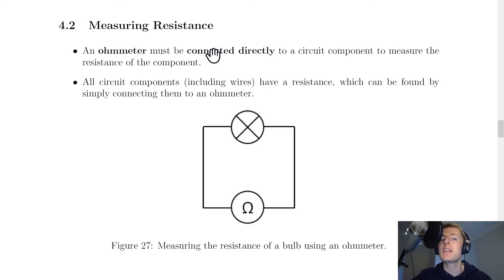And this must be connected directly to a circuit component to measure the resistance of the component. So we don't actually connect an ohmmeter into a circuit like an ammeter or in parallel with something like a voltmeter. We actually take a component out of a circuit to measure the resistance of it.